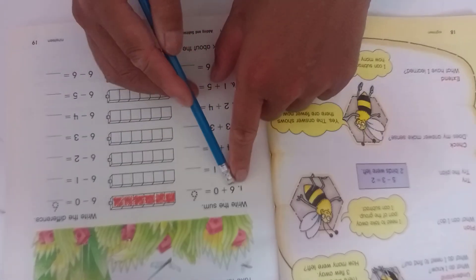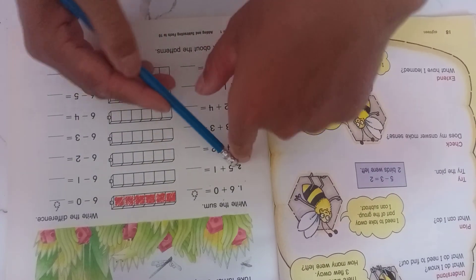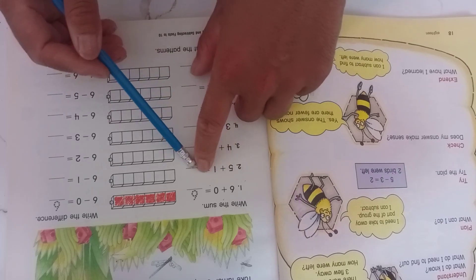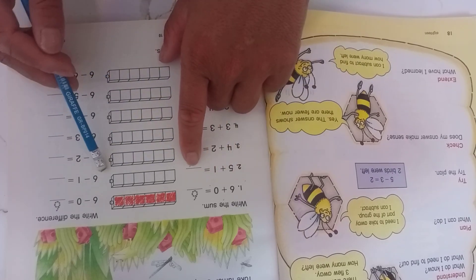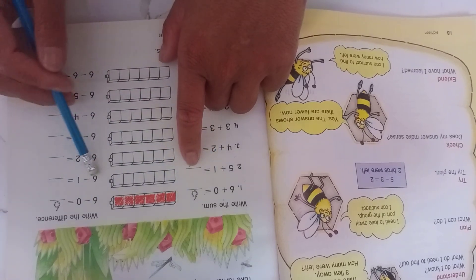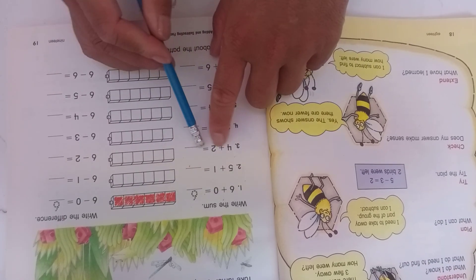Six minus zero equals six. Number two is five plus one equals six, and the difference is six take one equals five. Number three is four plus two equals six, and six take two equals four.